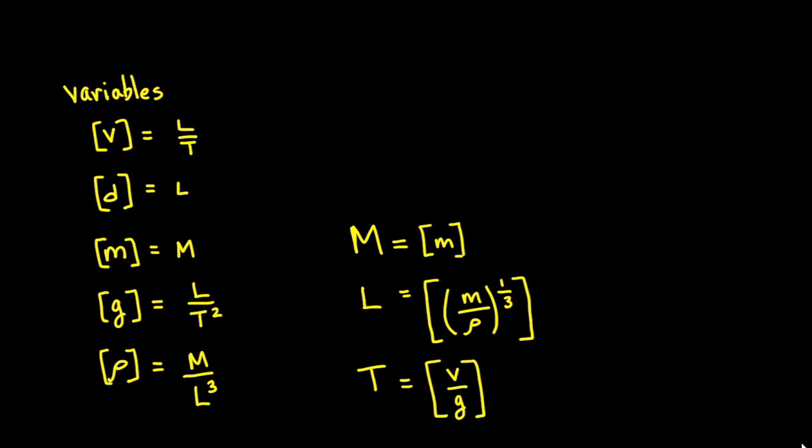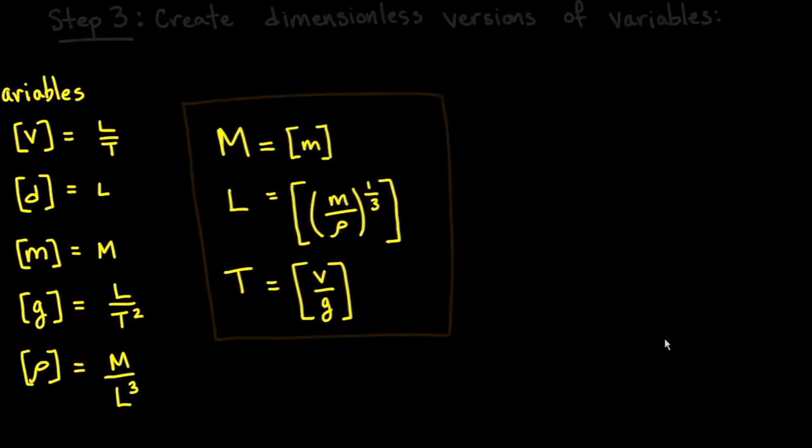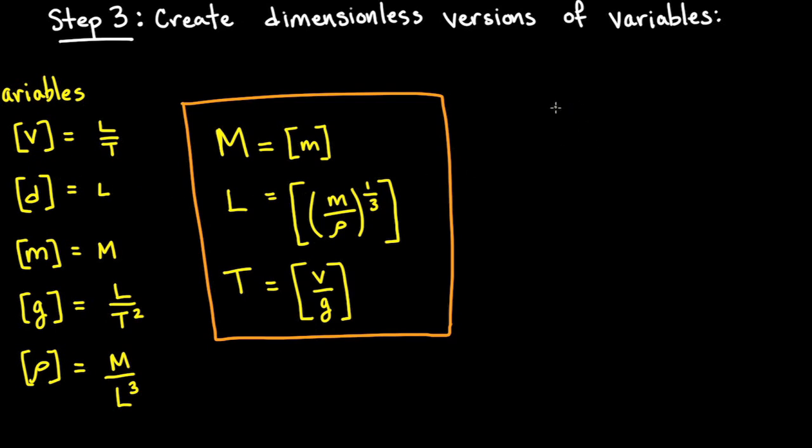The third step is to use these fundamental dimensions to turn all of the variables involved into dimensionless quantities. For example, the terminal velocity v has dimension of length over time. So we multiply v by the dimension of time and divide by the dimension of length to get a dimension of 1. We define a new dimensionless variable v bar as this dimensionless version of v.